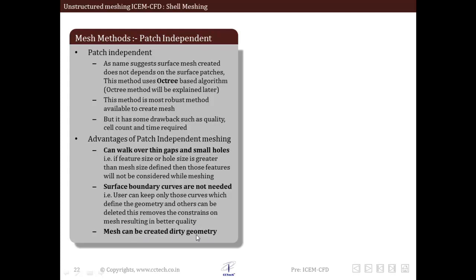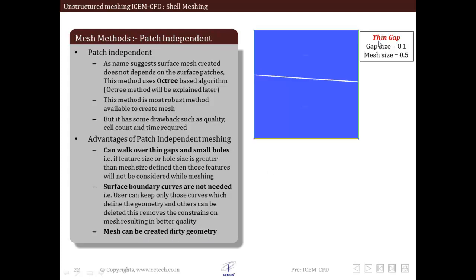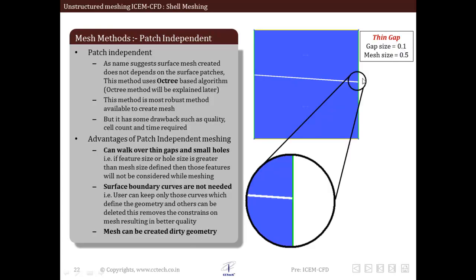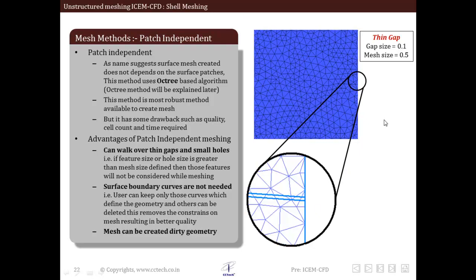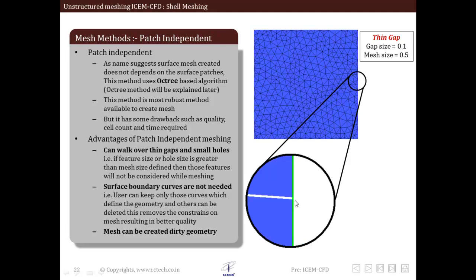Mesh can be created using dirty geometries also. Let's say the gap size is 0.1 and the mesh size is 0.5. We have a thin gap with two edges as you can see in the zoomed image. This is the mesh created by this particular patch independent algorithm. As you can see, this gap is basically neglected.